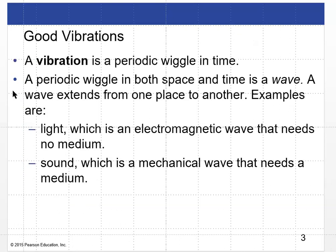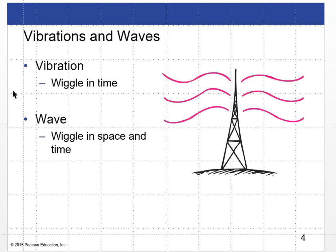A vibration is a periodic wiggle in time. A periodic wiggle in both space and time is a wave. A wave extends from one place to another. Examples are light, which is an electromagnetic wave that needs absolutely no medium, and sound, which is a mechanical wave that needs a medium to travel through, such as air.